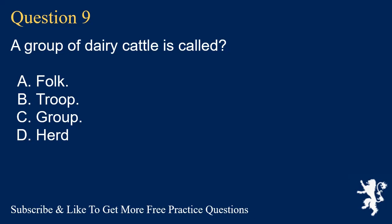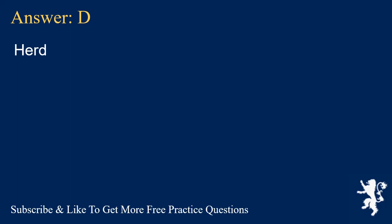Question 9. A group of dairy cattle is called? A. Folk. B. Troop. C. Group. D. Herd. Answer: D. Herd.